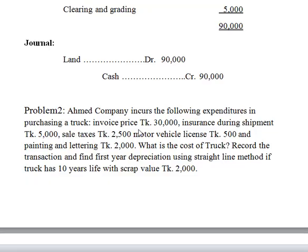Invoice price is $30,000. Insurance during the shipment is $5,000. Sales tax is $2,500. Motor vehicle license is $500. Painting and lettering is $2,000. What is the cost of the truck?